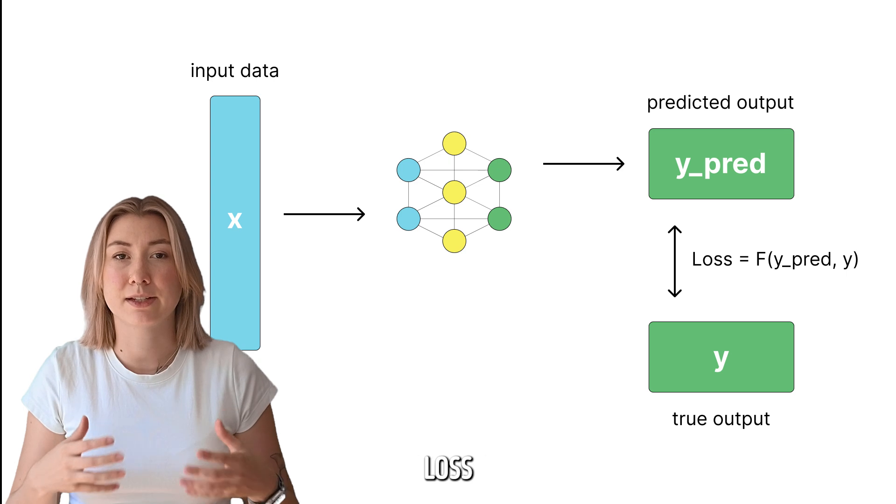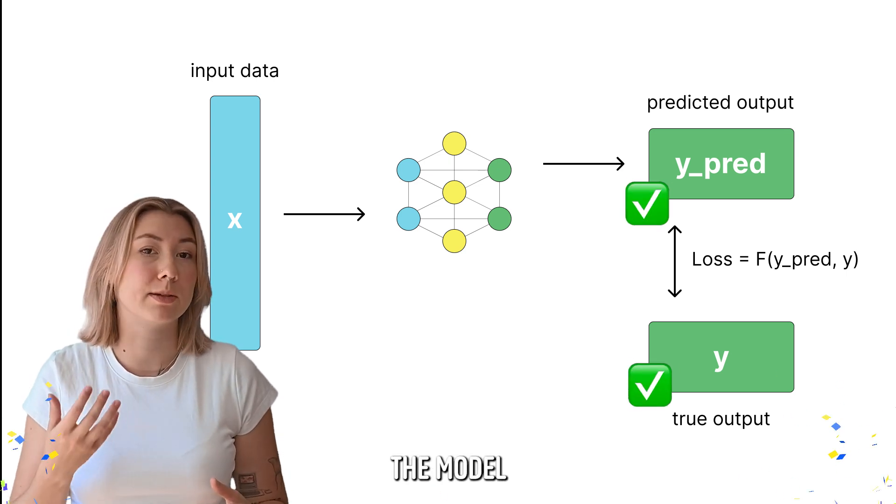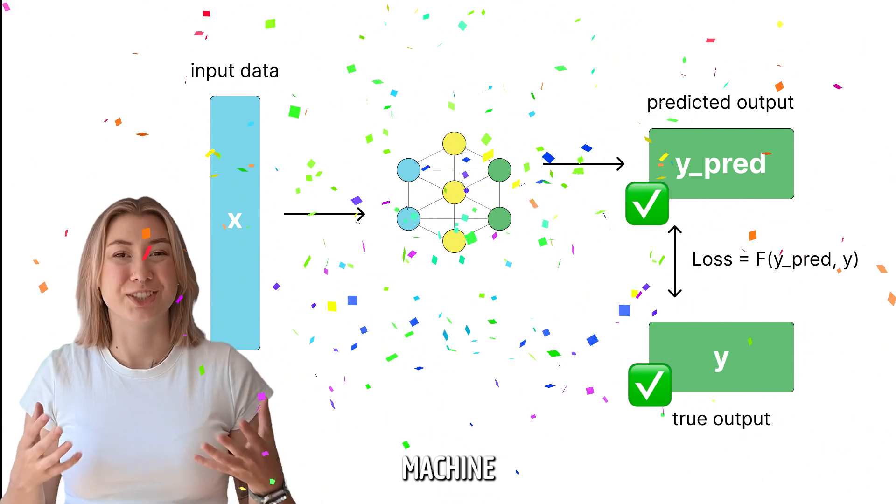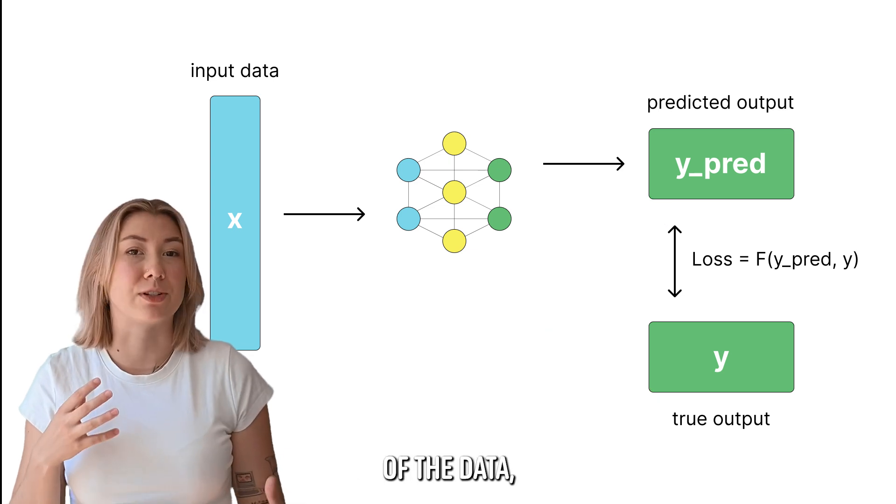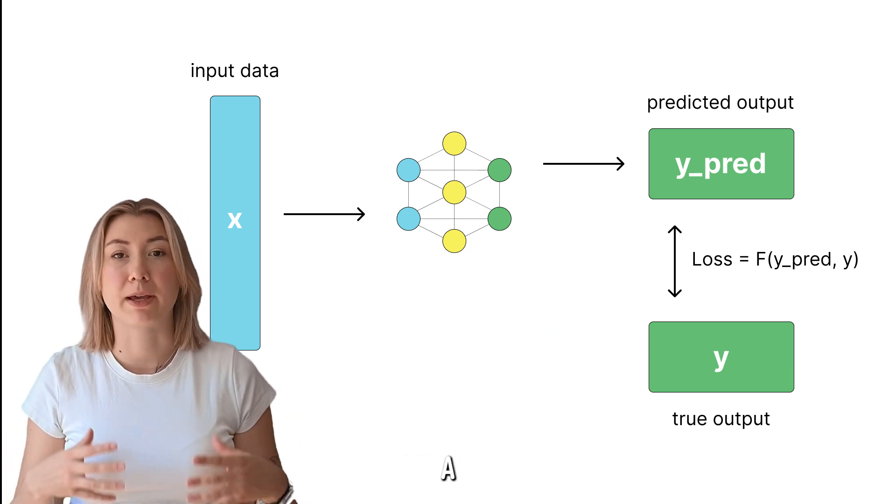Intuitively, you can consider a basic loss function as something that rewards the model when it predicts something correctly. Machine learning models also learn some kind of internal representation of the data, like a vector, before they make a prediction.